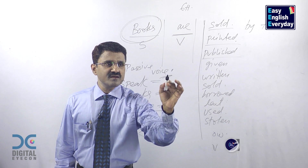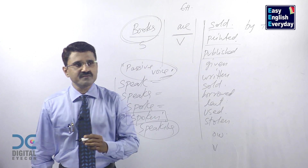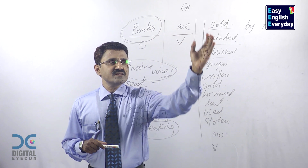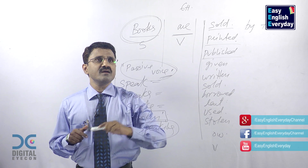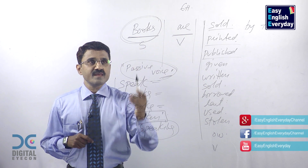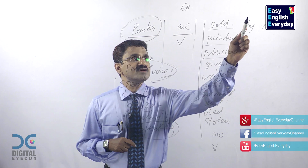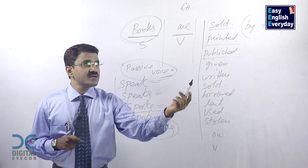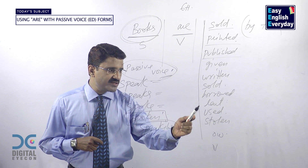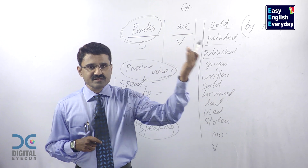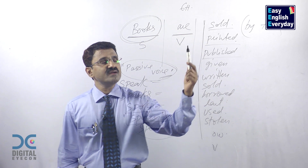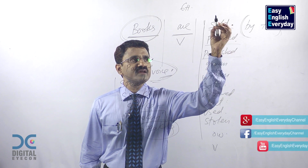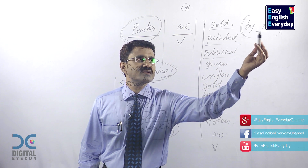Traditional teachers love to use this terminology in the classroom — passive voice. These are the sentences you should use when you are highlighting the receiver subject but not the doer. The actions — sold, printed, published, given, written, borrowed, lent, used, stolen — are done by somebody else, but they are not getting the importance here. They are avoidable, they are removable. I can keep the full stop here itself — that itself indicates they are not getting any importance.